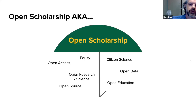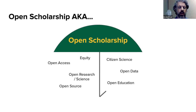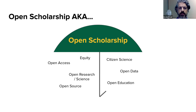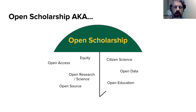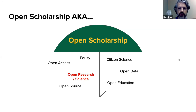When we think about open scholarship there are a lot of different ways to consider it. It might be open access, open science — very common in the sciences — open source software, or citizen science where the public collaborates and provides data alongside researchers. What's important for you as a student is really the open research and science side of things — that's where we'll focus today.